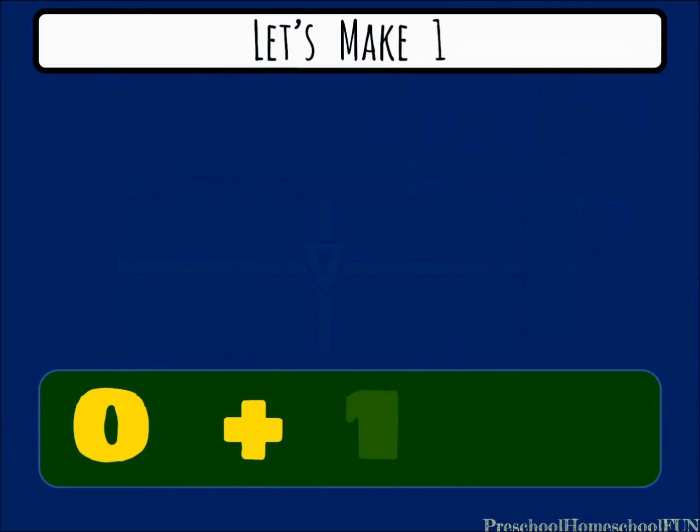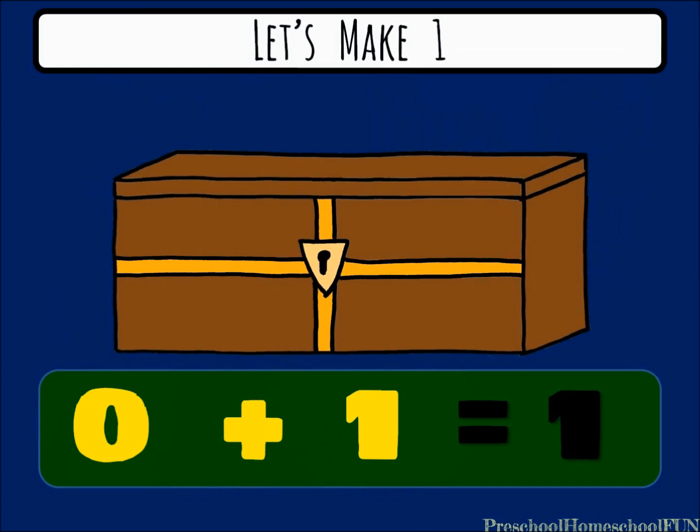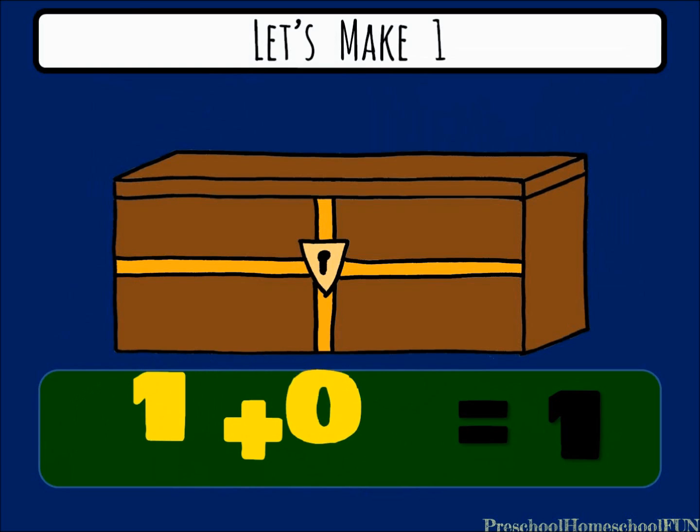If we have 0 of something, but we add 1 box, look, we have 0 plus 1 equals 1. Now, if we don't add any more boxes, look, we can rearrange those numbers and say it this way. We had 1 box plus 0 boxes equals 1. 1 plus 0 equals 1.